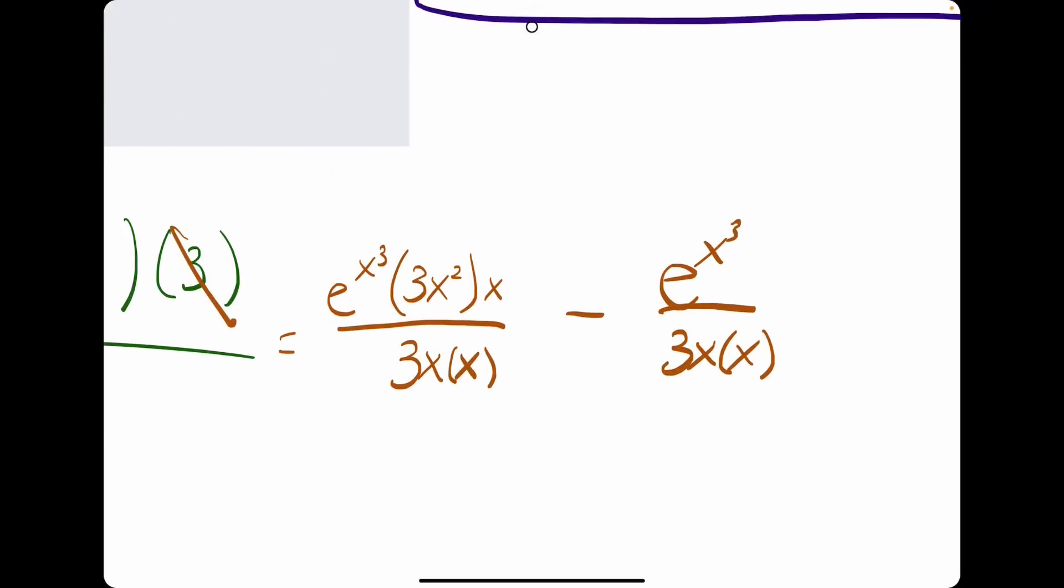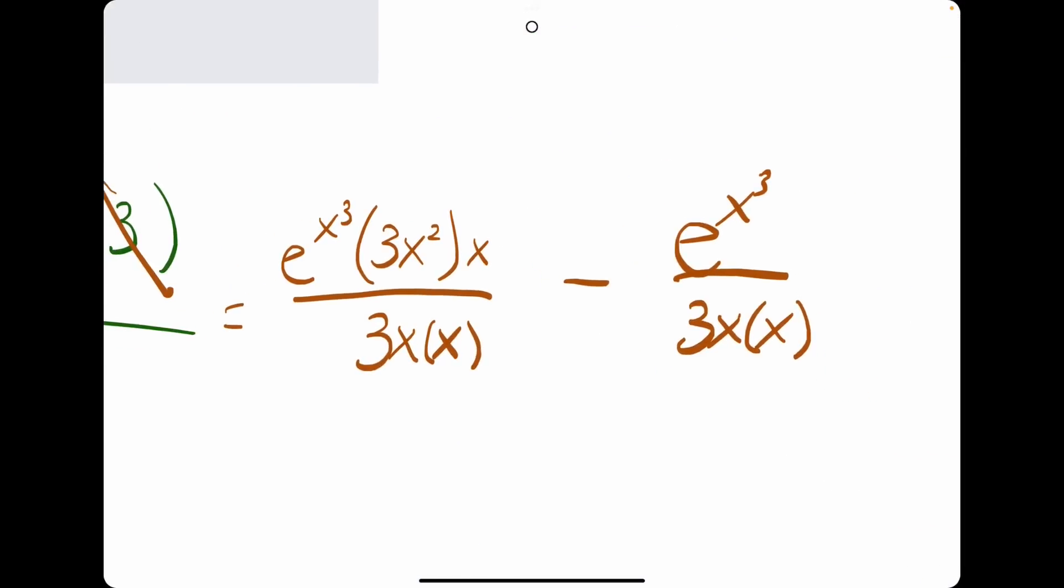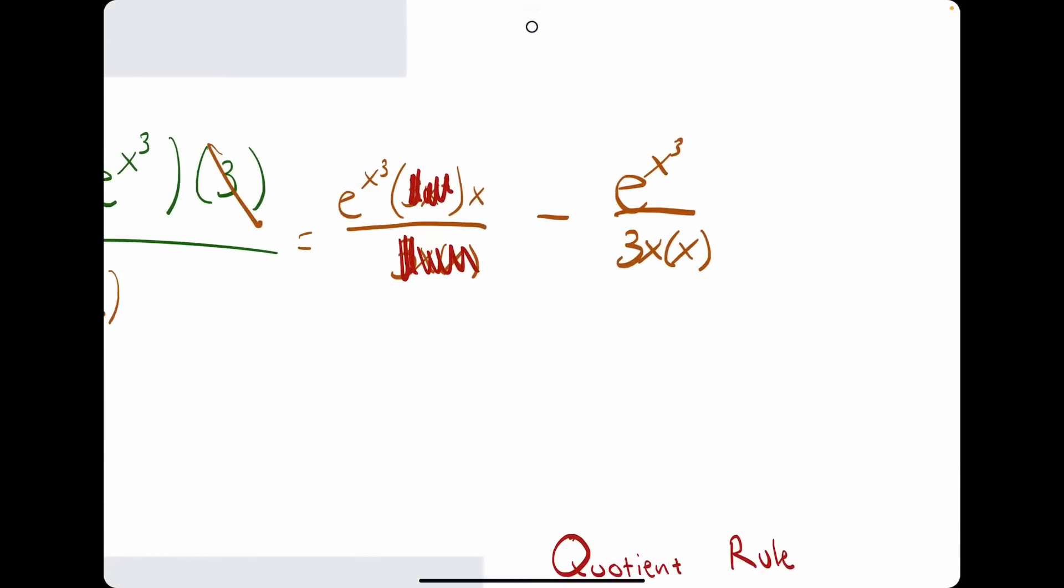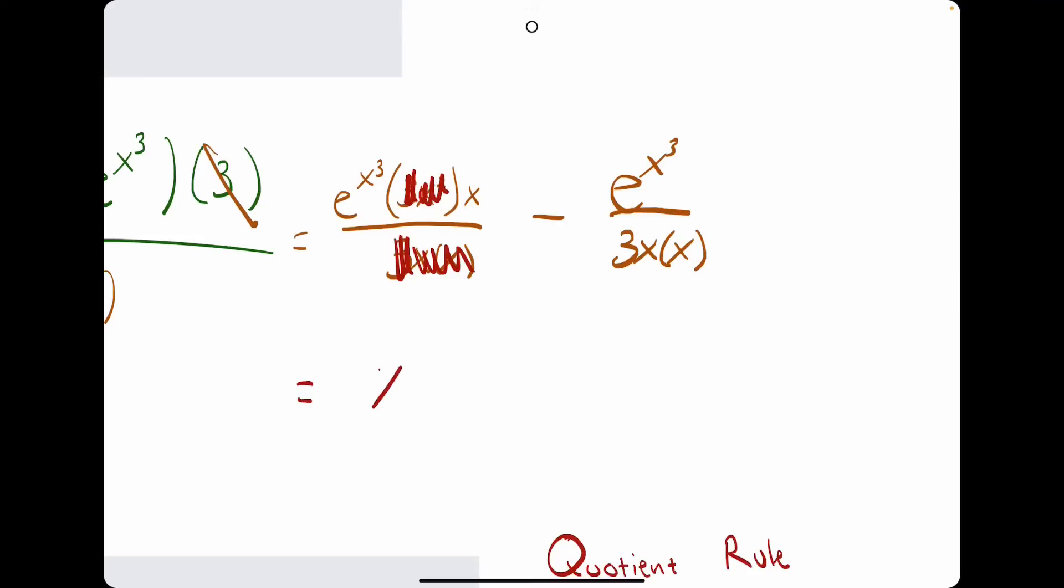All right. So then, can we cancel anything out amongst these individual terms? It looks like this first fraction has a lot we can cancel out. We have two x's here, in other words, x squared, that we can cancel. We also have an x squared on top. We also have a 3 on top and bottom that we can cancel. And then, over here, I think it just has to stay the same. There's nothing that can cancel. So, what we're left with is x, e to the x cubed, minus e to the x cubed, over 3, x times x is x squared.